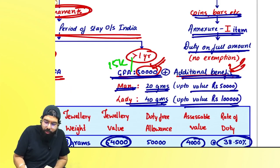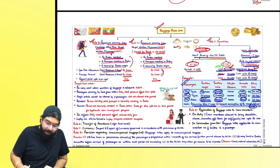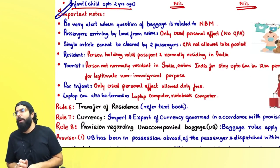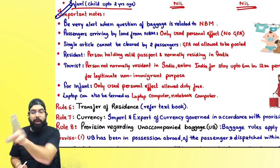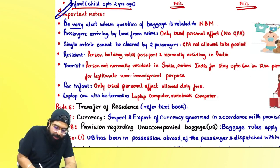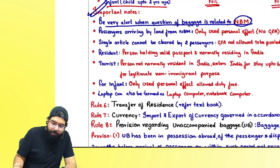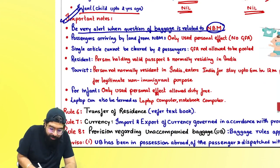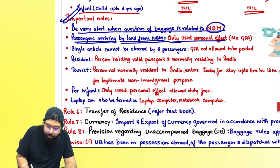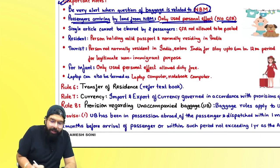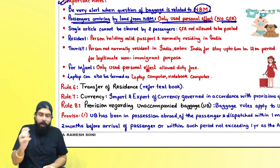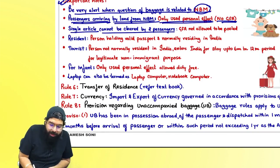If you are getting gold coin, bar, etc., it is an annexed item — duty on full amount, no exemption given. Important notes for the exam: in case of Nepal, Bhutan, and Myanmar, only 15,000 is allowed if coming by air route. Never allow 50,000 for these countries. Passengers arriving by land route: only used personal effects are allowed, no general free allowance. Also remember: a single item cannot be cleared by two passengers — general free allowance cannot be pooled.